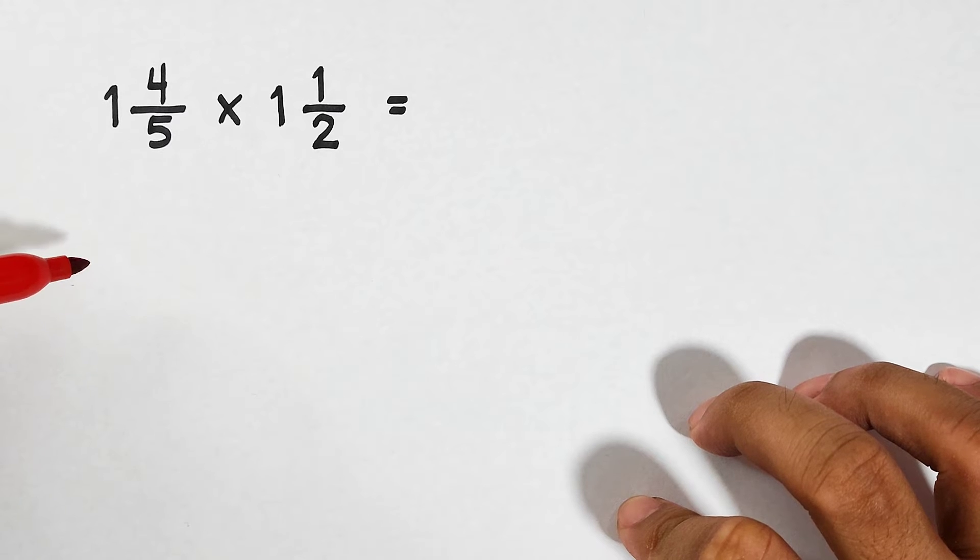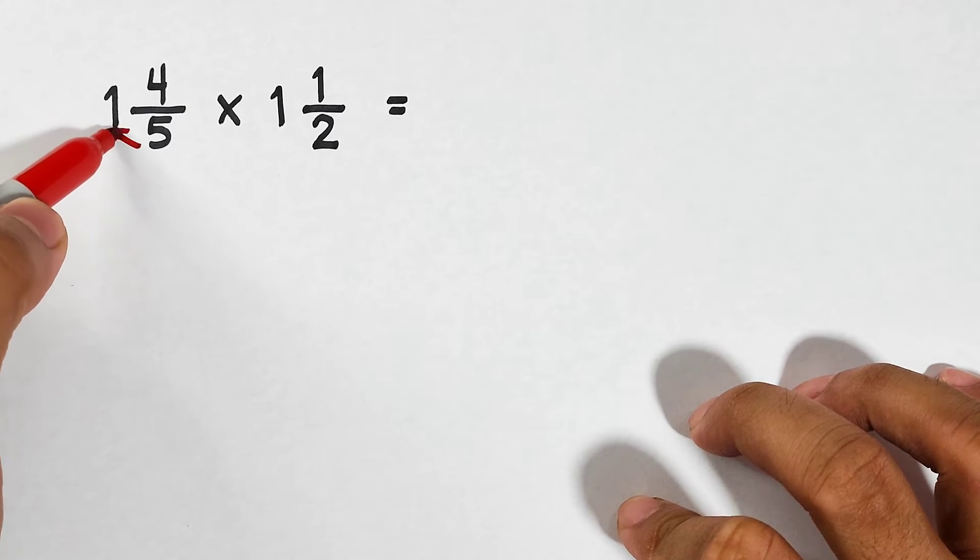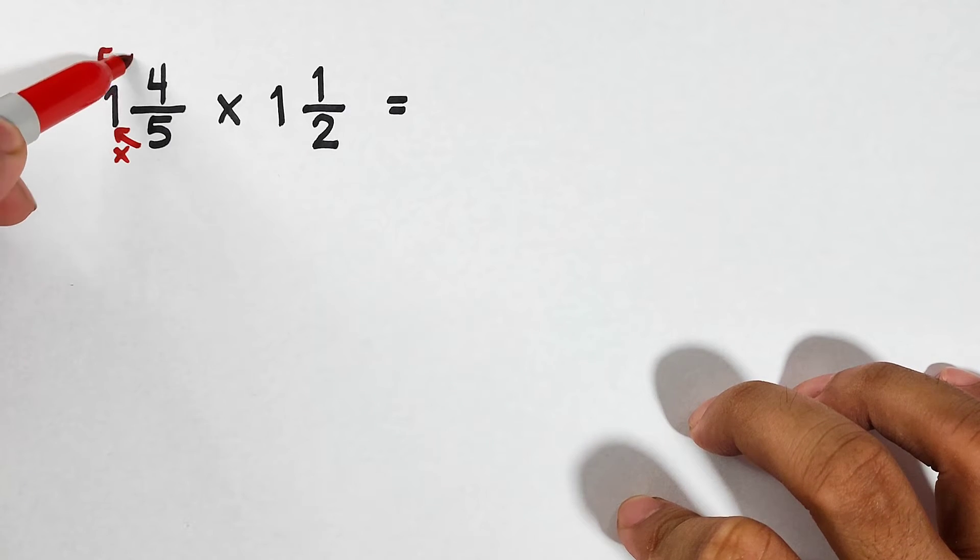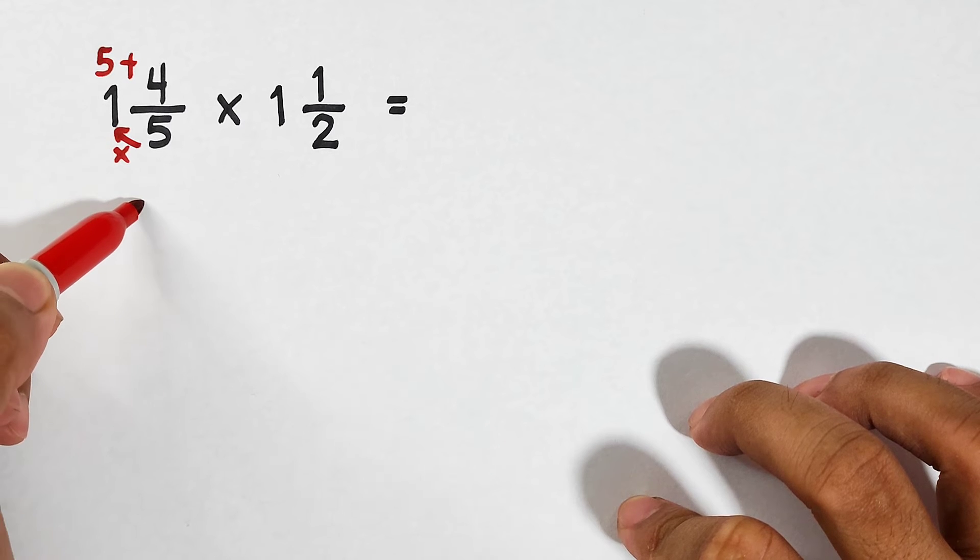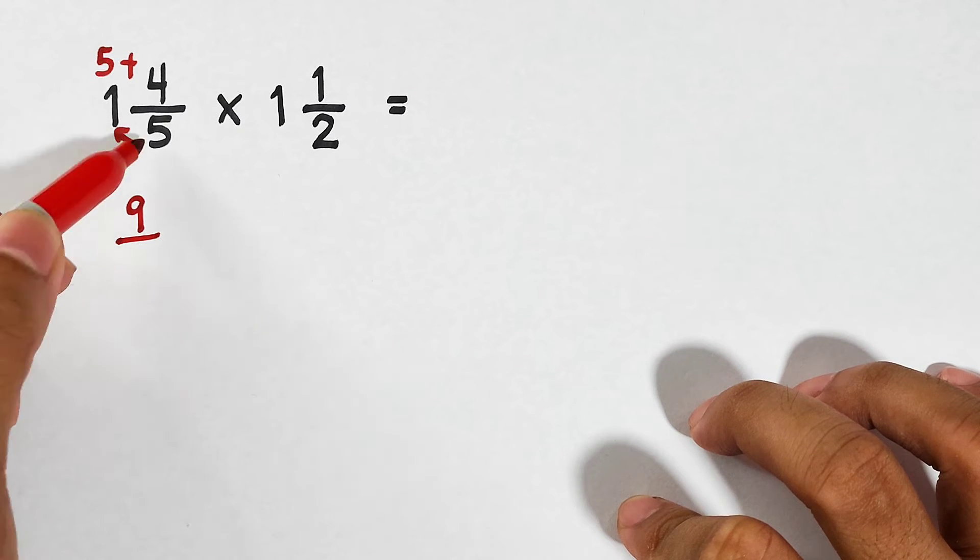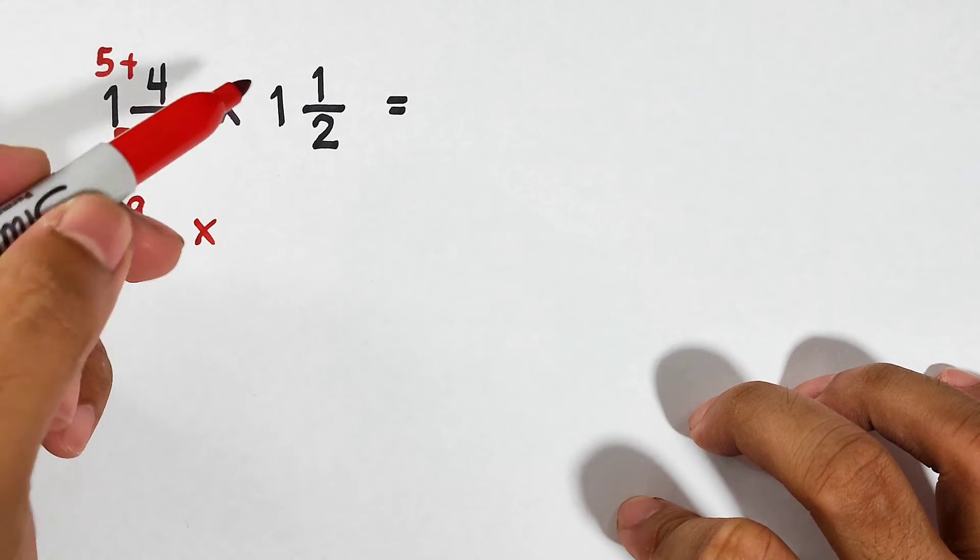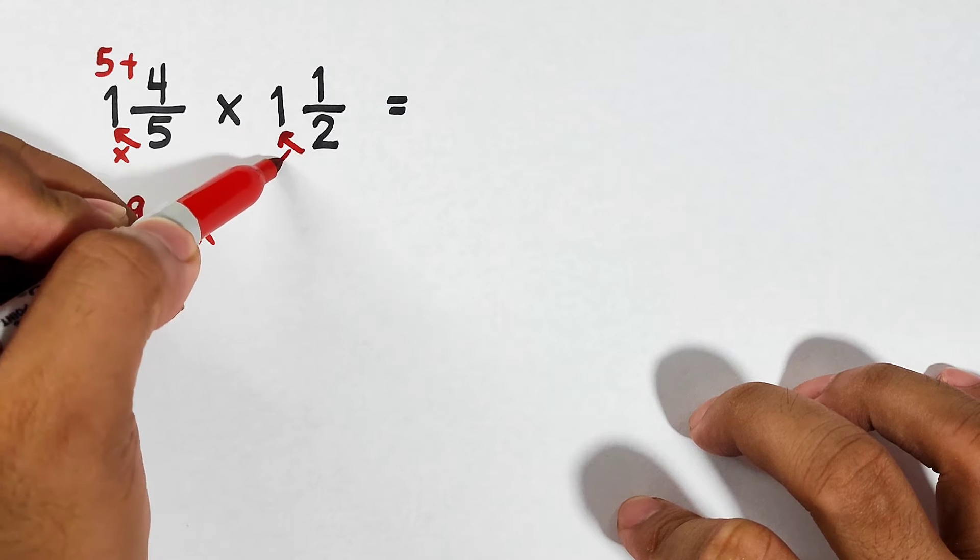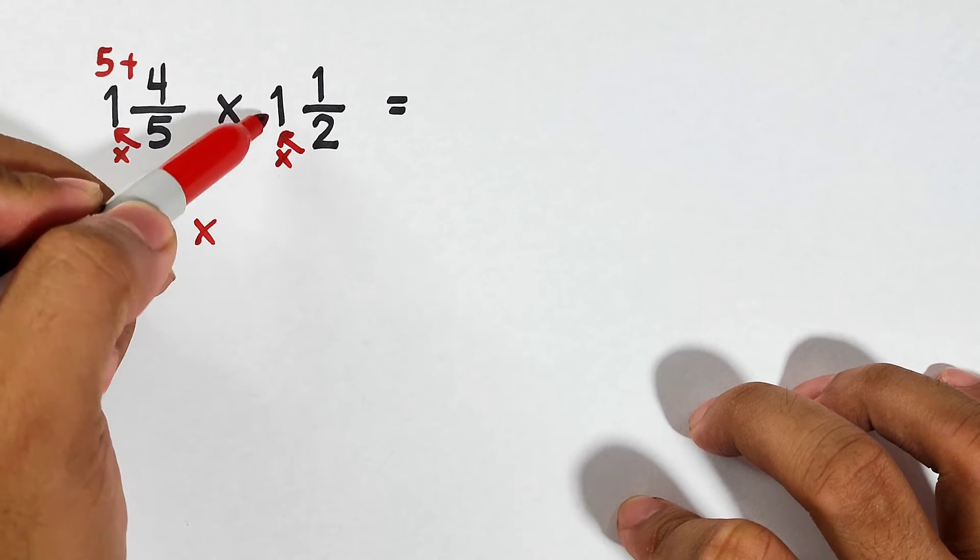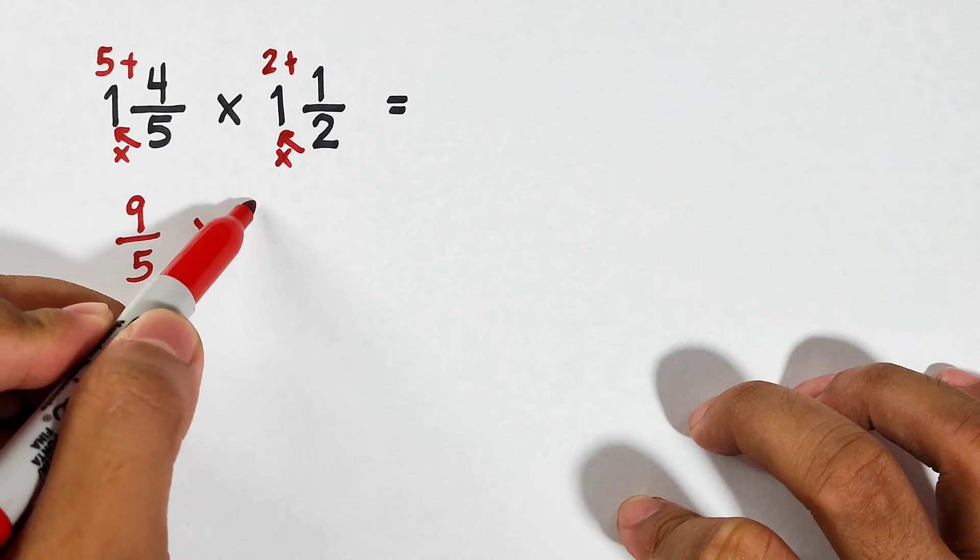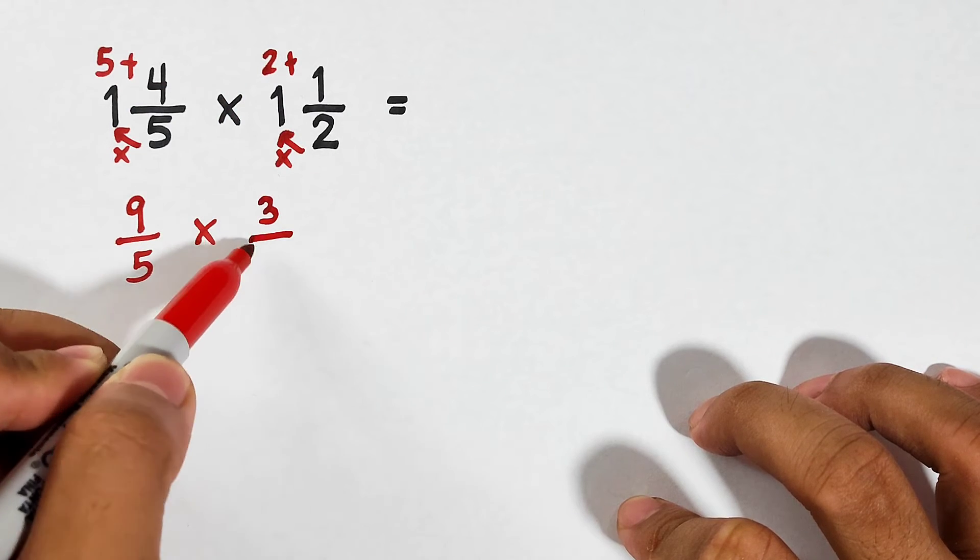Okay, let's continue. Convert this into mixed number. Multiply. 5 times 1 is 5. Then add this. This is equal to 9. Then copy your denominator, which is 5. Times 1, 1 half. Convert this. Multiply. 2 times 1 is 2. 2 plus 1. This is 3 over 2.